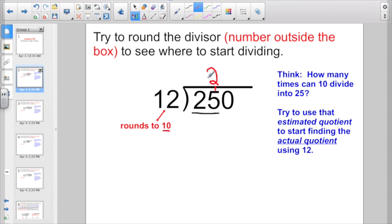So when you multiply back, you're not multiplying back your estimated divisor. You're really using the real divisor of 12. Two times 12 is 24. Multiply it back, subtract it out.